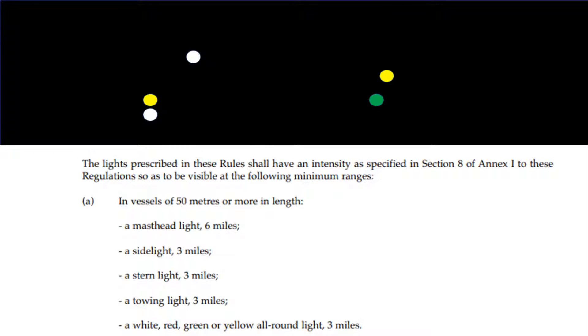In vessels of 50 metres or more in length: a masthead light 6 miles, a side light 3 miles, a stern light 3 miles, a towing light 3 miles, a white, red, green or yellow all-round light 3 miles.